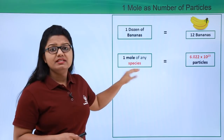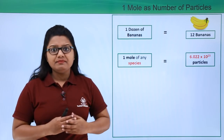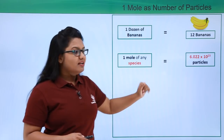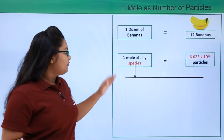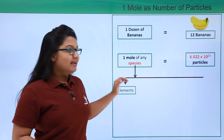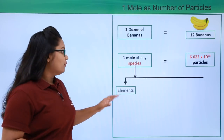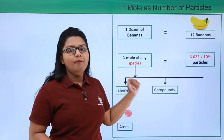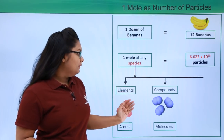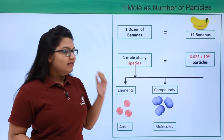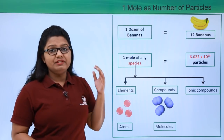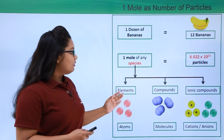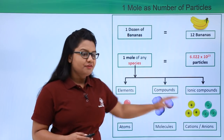Now, what do I mean by species? Species can be an element, a compound, or an ionic compound. The particles depend upon the kind of species you have. If the species is an element, the particles are atoms. If the species is a compound, the particles are molecules. If the species is an ionic compound composed of positive and negative ions, the particles are cations and anions.